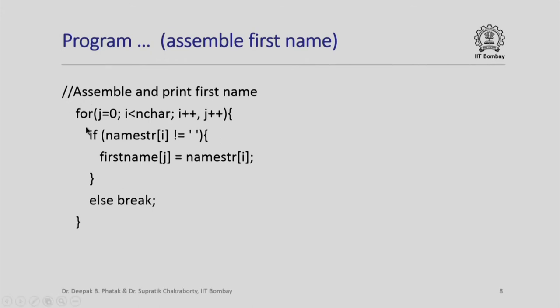Notice that inside this loop all that we do is if the character that we encounter is not blank, it is part of the current word. So we insert that into the firstname. Notice we pick up the ith character of namestr and insert it into the jth character of firstname, because firstname starts with j equal to 0.